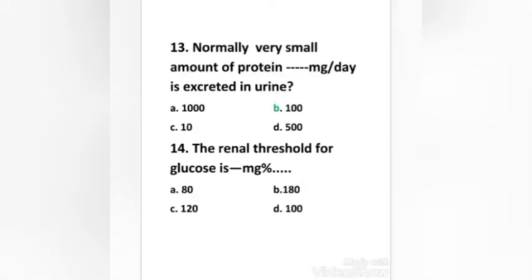Next question: normally a very small amount of protein — dash milligrams per day — is excreted in urine. Options: 1000 mg per day, 100 mg per day, 10 mg per day, 500 mg per day. Right answer is option B, 100 mg per day.